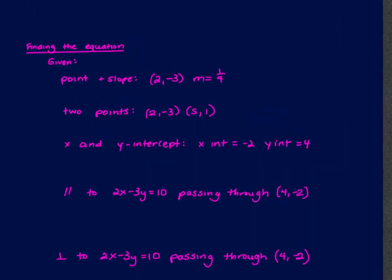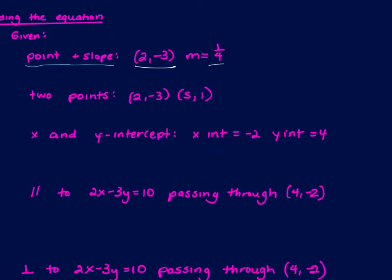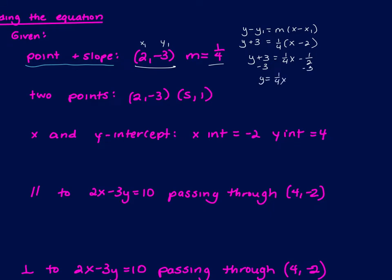Let's work through some examples finding the equation given different types of information. If you're given a point and a slope, you have two options: plug it into slope-intercept and solve for b, or use point-slope. I prefer point-slope. So with point (2, -3) and slope 1/4: y minus (-3) becomes y plus 3 equals 1/4 times (x minus 2). Distribute the 1/4: negative 2 times 1/4 becomes negative 1/2. Subtract the 3, and y equals 1/4 x minus 7/2.